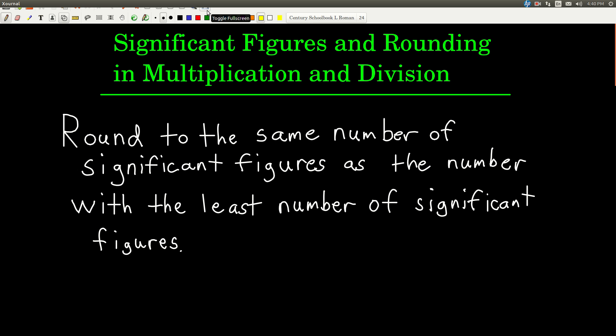So if you're multiplying two numbers, what you do is you count up how many significant figures each of them has. And let's say one has two sig figs, one has three, that means you're going to round your answer to two sig figs.